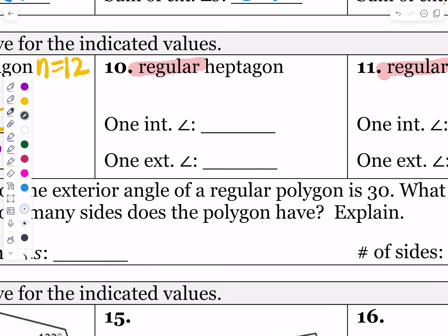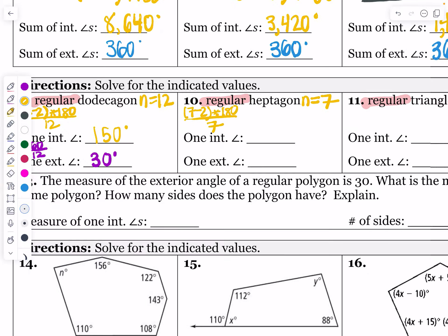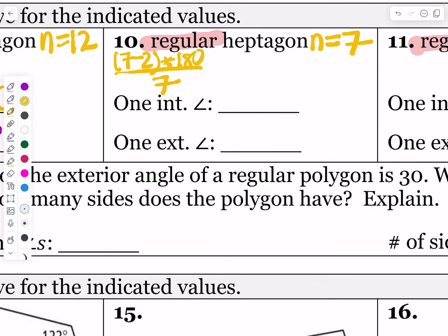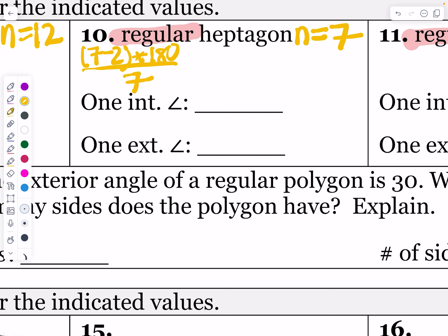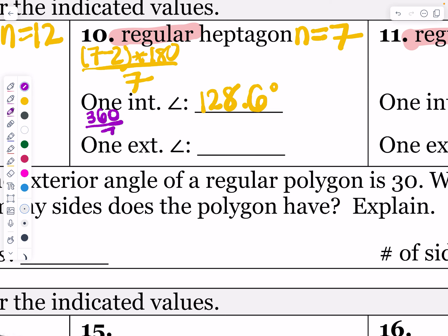For a regular heptagon, that is a seven-sided figure. So it's 7 minus 2 times 180, divided by 7: that's 5 times 180 giving a sum of 900, divided by 7 angles. Rounding to the nearest tenth, one interior angle is approximately 128.6 degrees. The exterior angle is 360 divided by 7, which is about 51.4 degrees. Together those add up to 180 degrees.